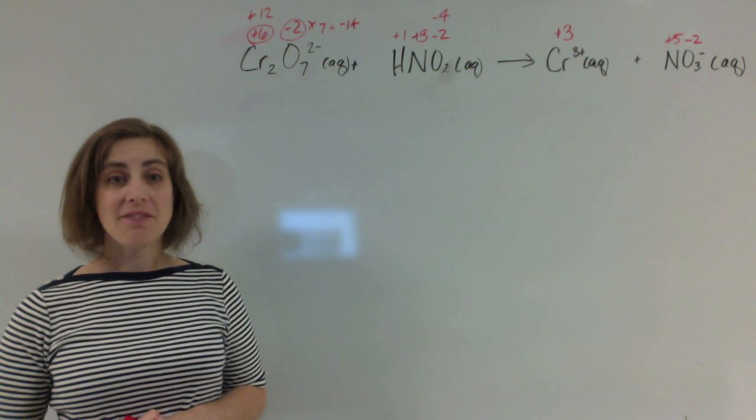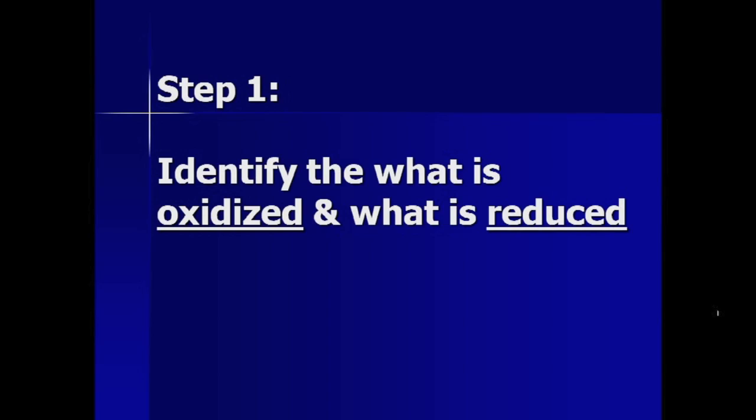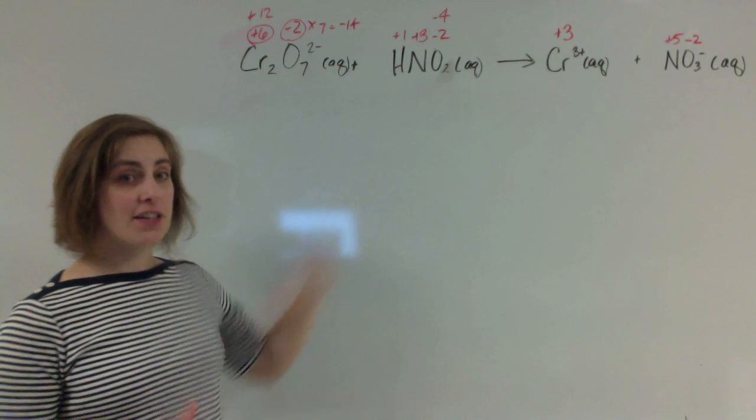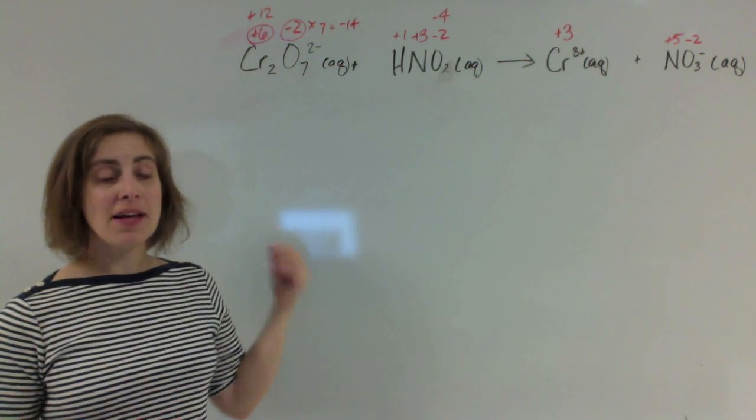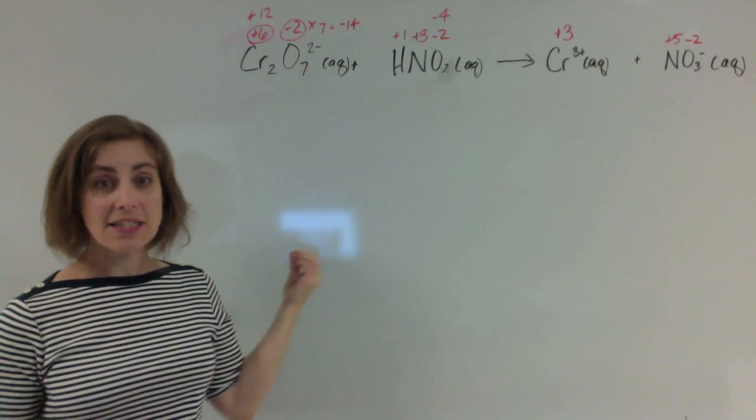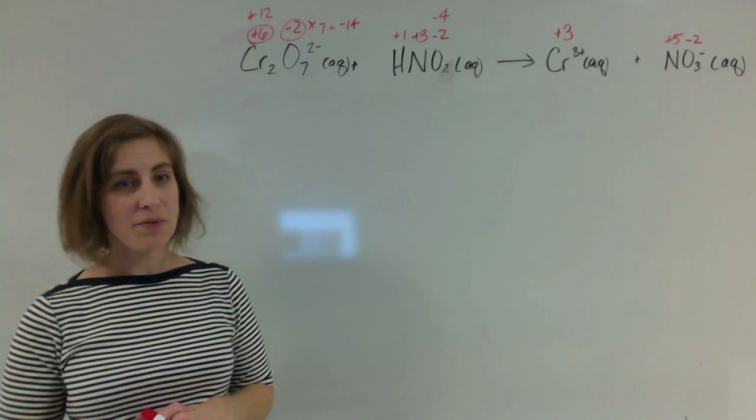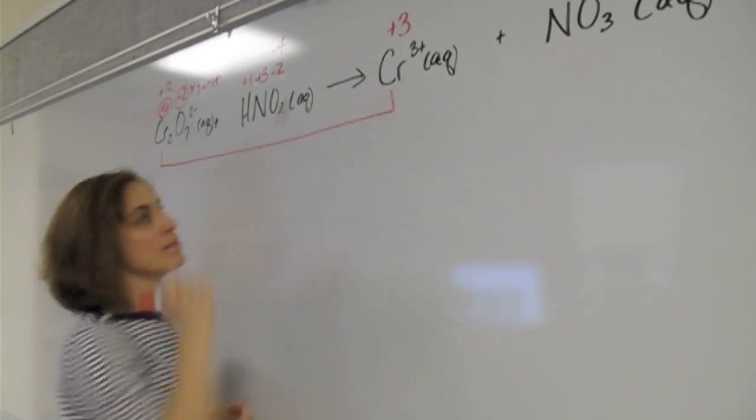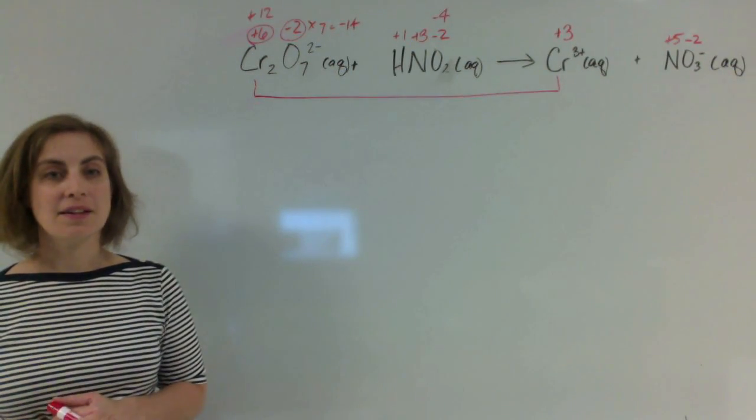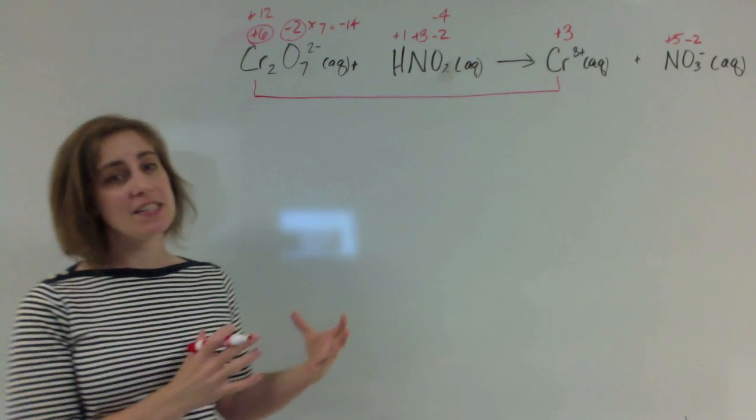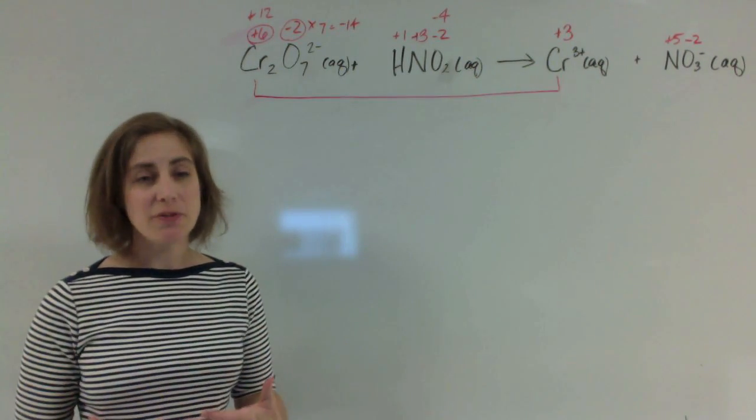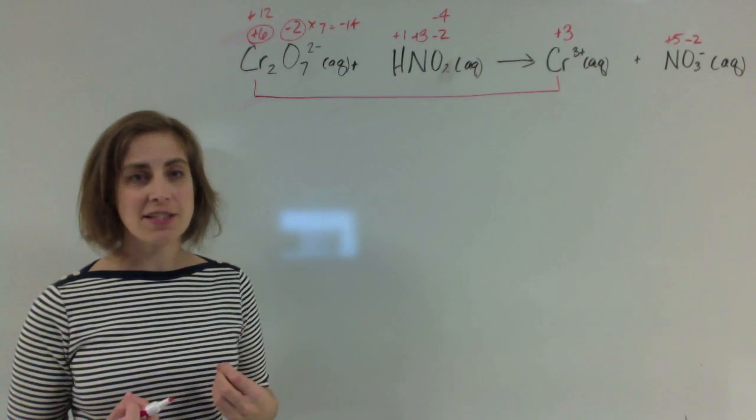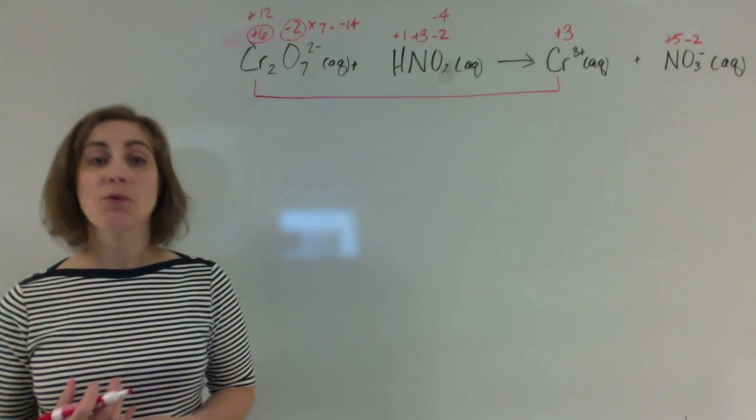Now we're going to go ahead and figure out what's been oxidized and what's been reduced. Looking at my reaction, I see that chromium has gone from a positive 6 to a positive 3. It changed its charge. In going from a positive 6 to a positive 3, it became less positive, which means it had to gain electrons, which means it has been reduced.